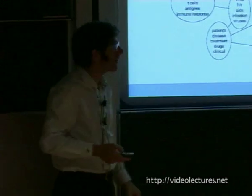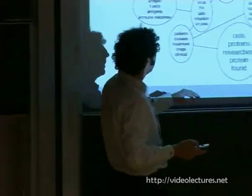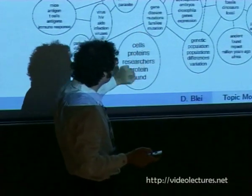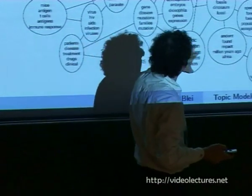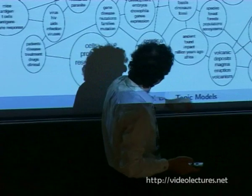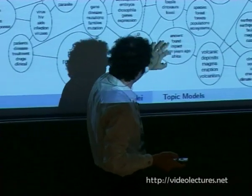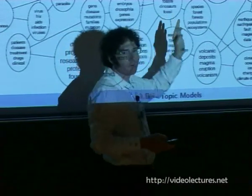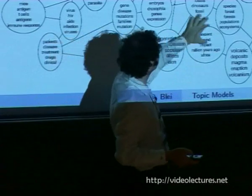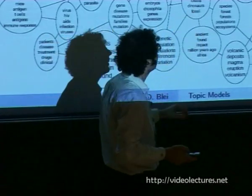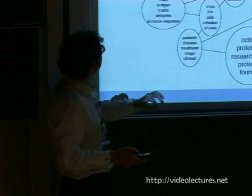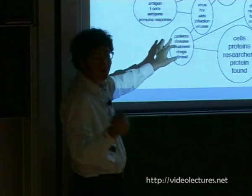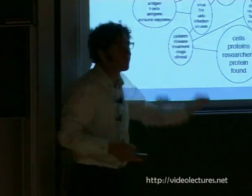We can also model connections between topics. Here are lists of words interpreted as topics from the science articles. Some topics tend to co-occur with other topics. For example, a topic about 'ancient, found, impact, million years ago, Africa' connects to a topic about 'fossil record, birds, fossils, dinosaurs, fossil.' Those two topics tend to co-occur, whereas the dinosaur topic doesn't connect as much with a topic about mice, antigen, T-cells, antigens, and immune response.